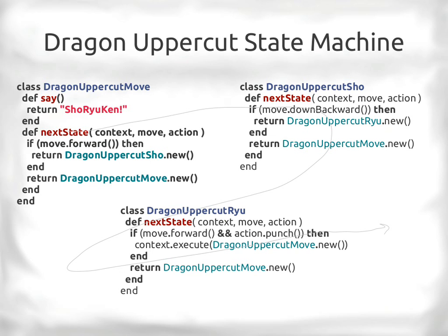The dragon uppercut is much the same: forward, then down-forward, then forward-punch. Each step checks for the next input and resets in all cases. It's forward, down-forward, forward-punch — and you execute the big uppercut, which makes you pretty much invincible while doing it.